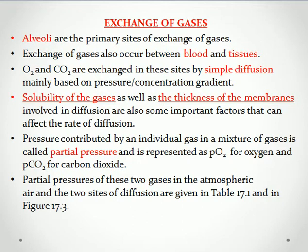Next topic is Exchange of Gases — how gases are exchanged when we inhale and exhale. How is gas transferred in the lungs? How are gases transported from lungs to blood and from blood to tissues? Alveoli are the primary sites of exchange of gases. Gaseous exchange actually occurs at the alveoli, which are balloon-like structures that are highly vascularized — richly supplied with blood. Exchange of gases also occurs between blood and tissues.